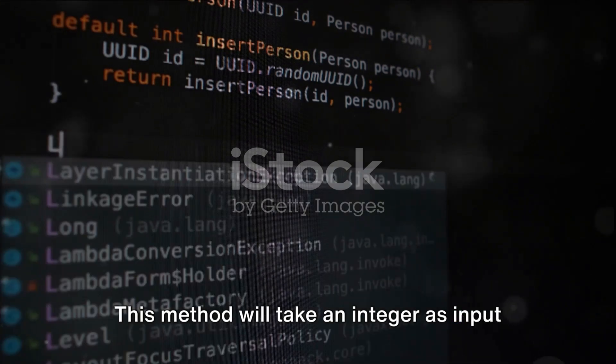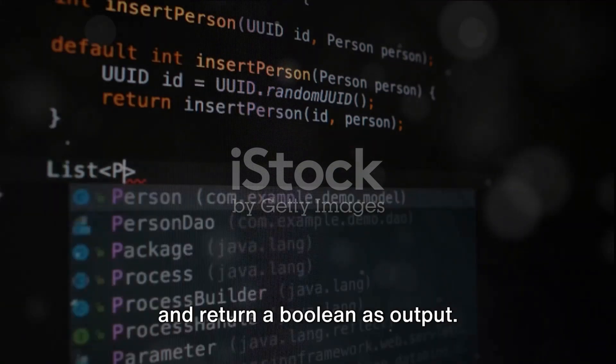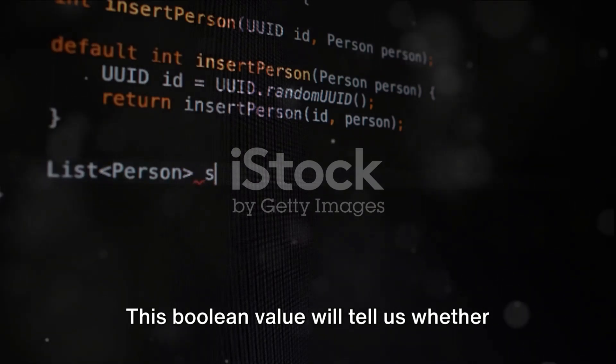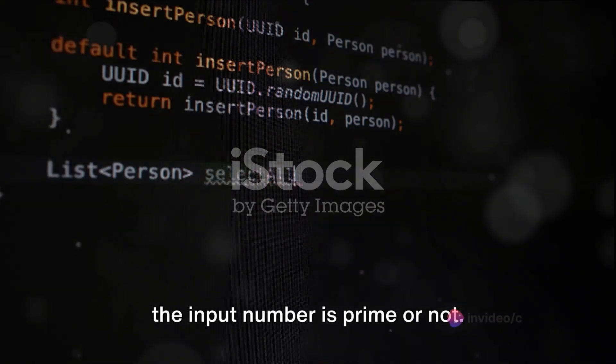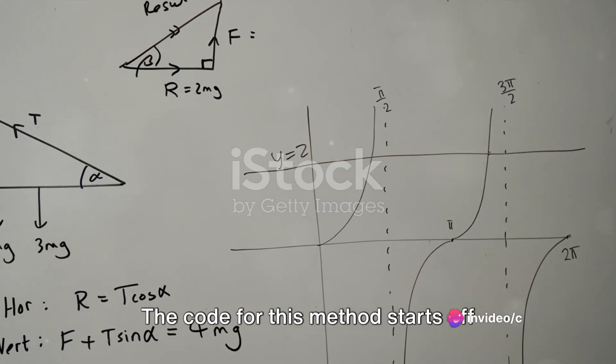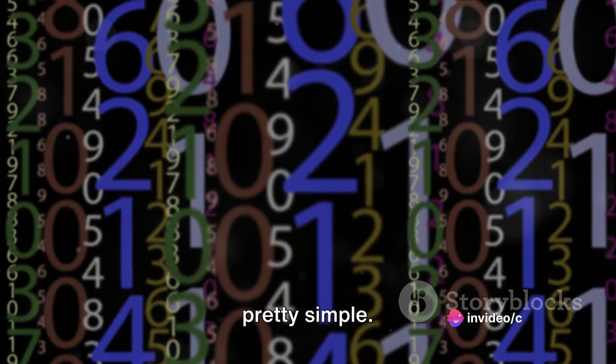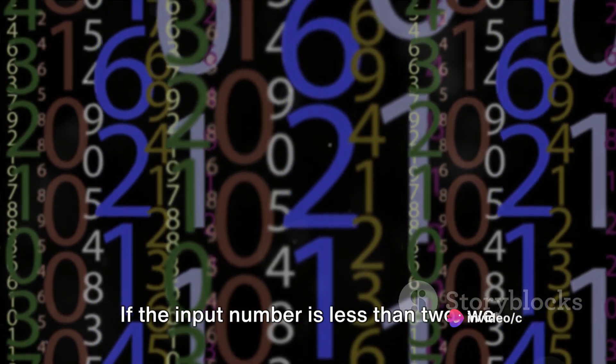This method will take an integer as input and return a boolean as output. This boolean value will tell us whether the input number is prime or not. The code for this method starts off pretty simple. If the input number is less than 2, we immediately return false.